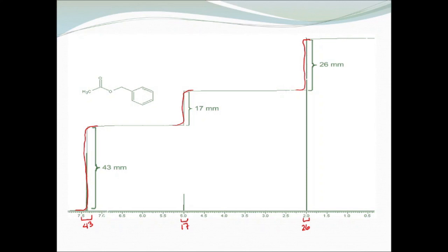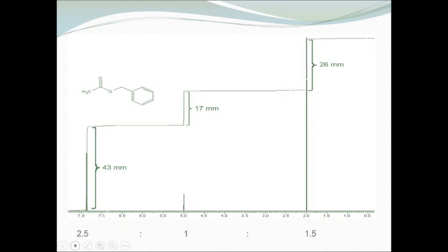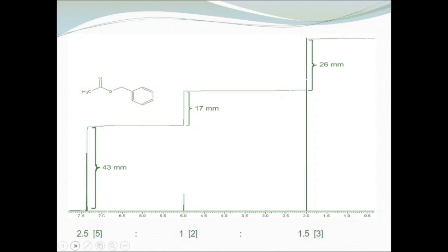Dividing by the smallest gives 1, 2.5, and 1.5. Since fractional hydrogens are not possible, we multiply by 2, giving ratios of 5, 2, and 3. Looking at the chemical shift, the first peak is in the aromatic region, correlating to 5 hydrogens on the benzene ring. The second integrates to 2, corresponding to a CH2 methylene group. The third at about 2 ppm integrates to 3, corresponding to a CH3 next to a carbonyl double bond.